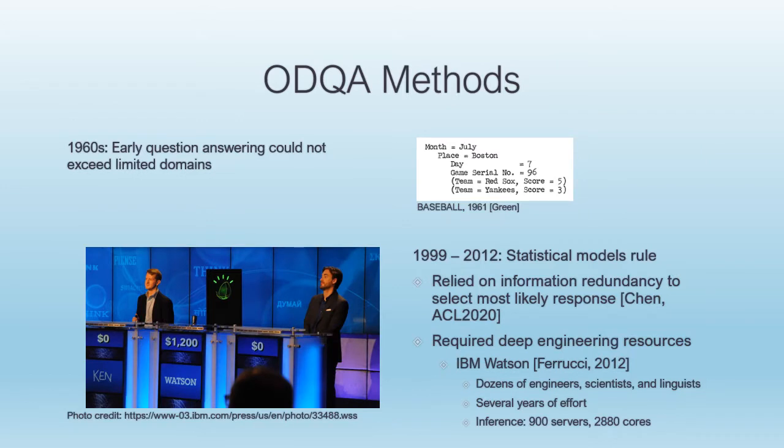Let's take a look at the methods that have been used in open domain question answering. Prior to this century, the field didn't really exist, as early question answering systems could only operate over very limited domains and vocabularies. The big leap forward came with the statistical methods of the aughts. IBM's Watson used an ensemble of statistical methods to crush Jeopardy human champions in 2012 in a widely lauded feat.